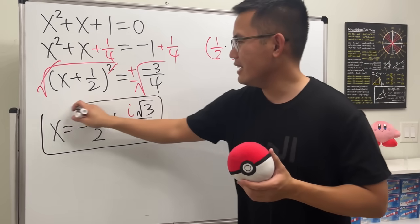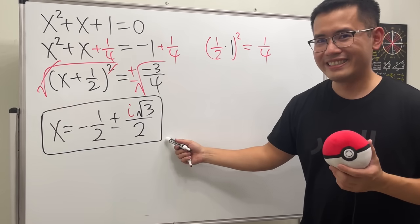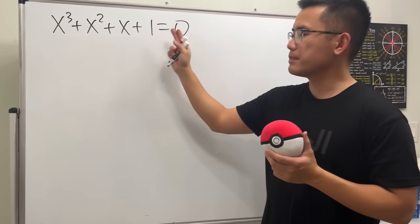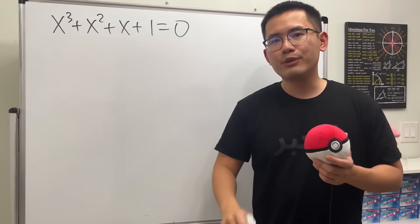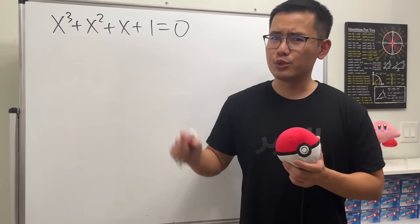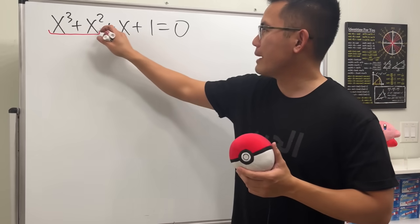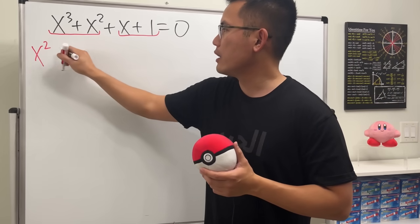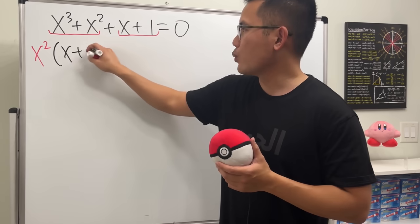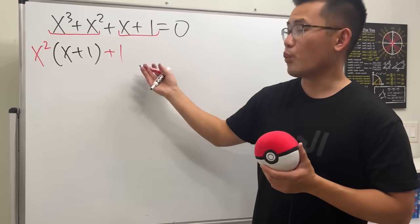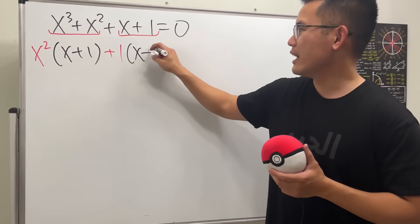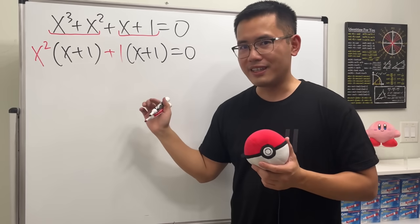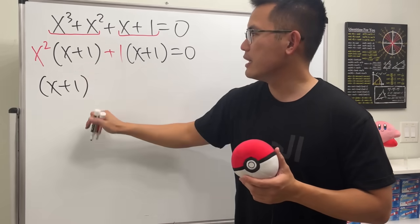Level three: now for this cubic equation, x cubed plus x squared plus x plus one is equal to zero. We don't need the cubic formula — we can factor by grouping. For the first two terms, we factor out x squared to get x plus one, and for the last two terms we factor out one to also get x plus one.